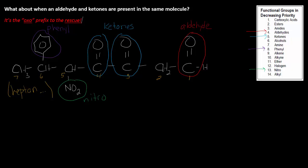Alphabetical order between nitro, oxo, and phenyl. N comes first, so this is 5-nitro. The oxo groups, those are the ketones, are at 3 and 4, so this is 3,4-dioxo.